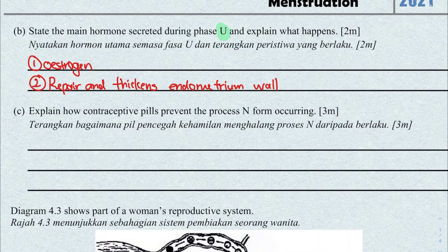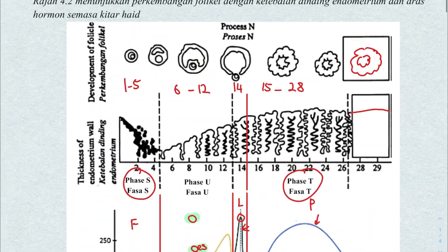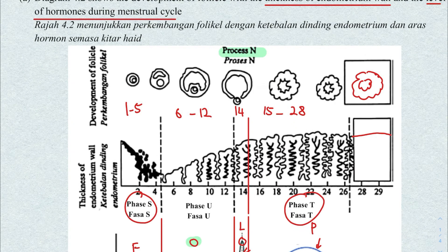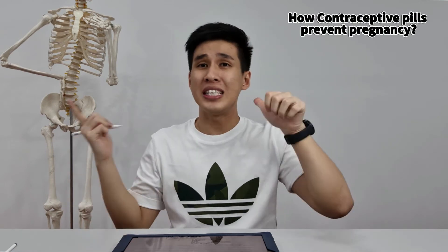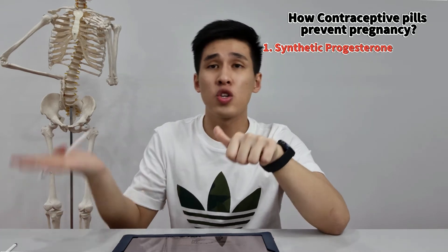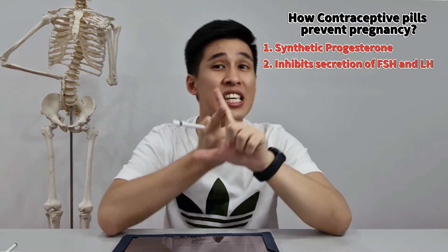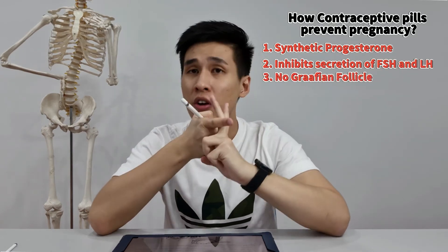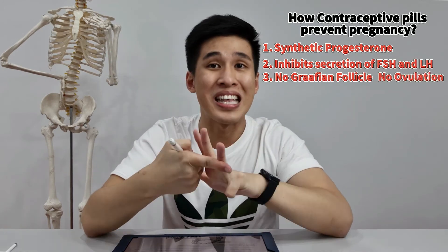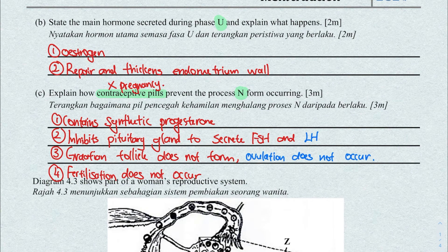The next question asks how contraceptive pills prevent process N — which is ovulation — from occurring. Contraceptive pills prevent pregnancy. If you don't want a baby, you must prevent ovulation, because without ovulation there is no secondary oocyte and basically no fertilization. The contraceptive pill contains synthetic progesterone — artificial progesterone. This hormone has a negative feedback mechanism, so it inhibits the pituitary gland from secreting FSH and LH. Without FSH, there will be no Graafian follicle. Without LH, there will be no ovulation. Hence, fertilization does not take place and there will be no pregnancy.